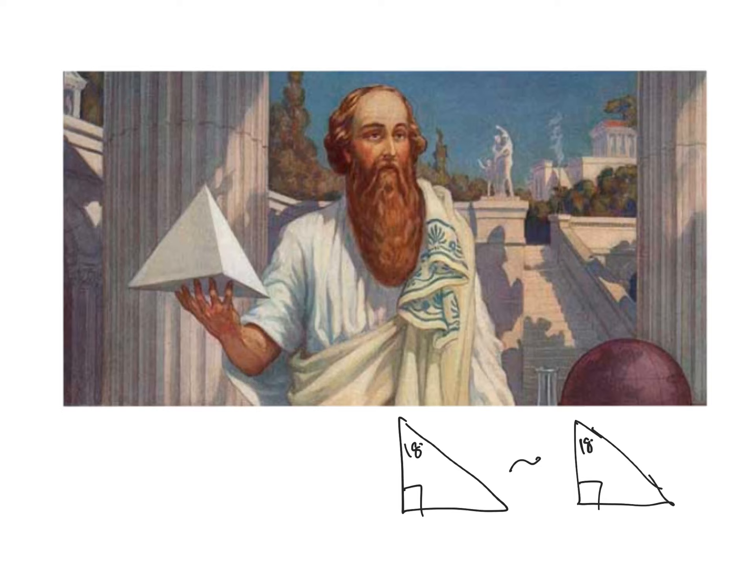So what they did was they started compiling all these ratios. Anytime you had a right triangle with another 18-degree angle, the corresponding sides had to be in a specific ratio to each other — so they're proportional.